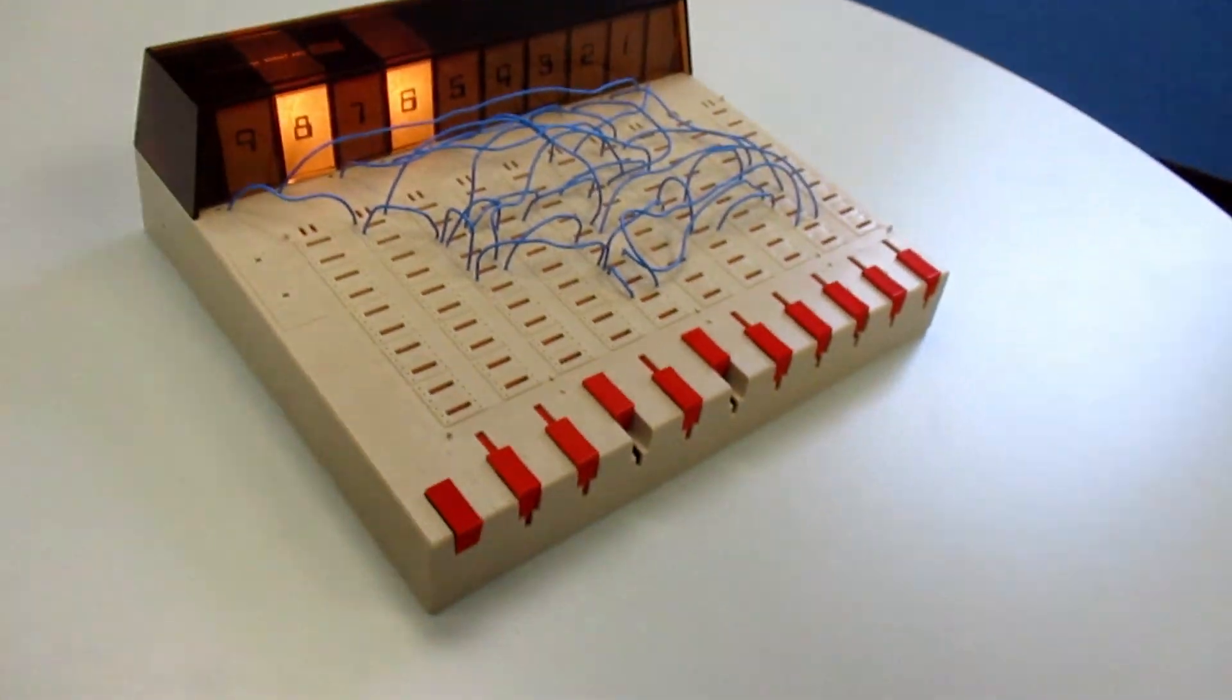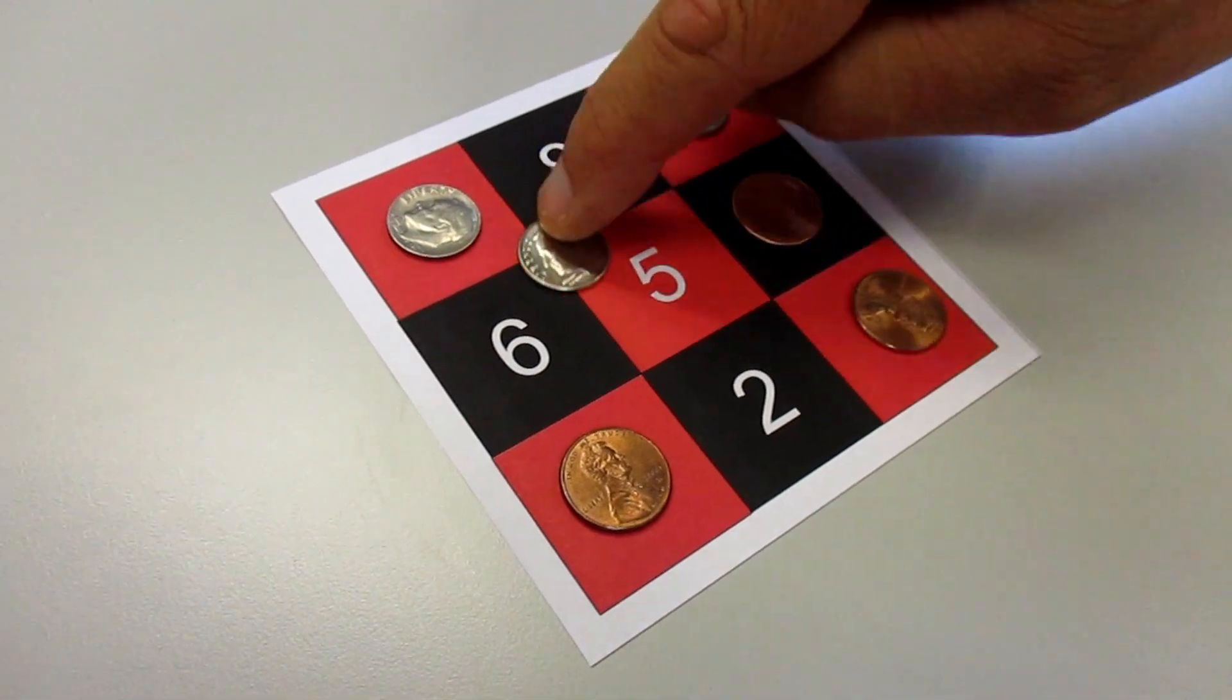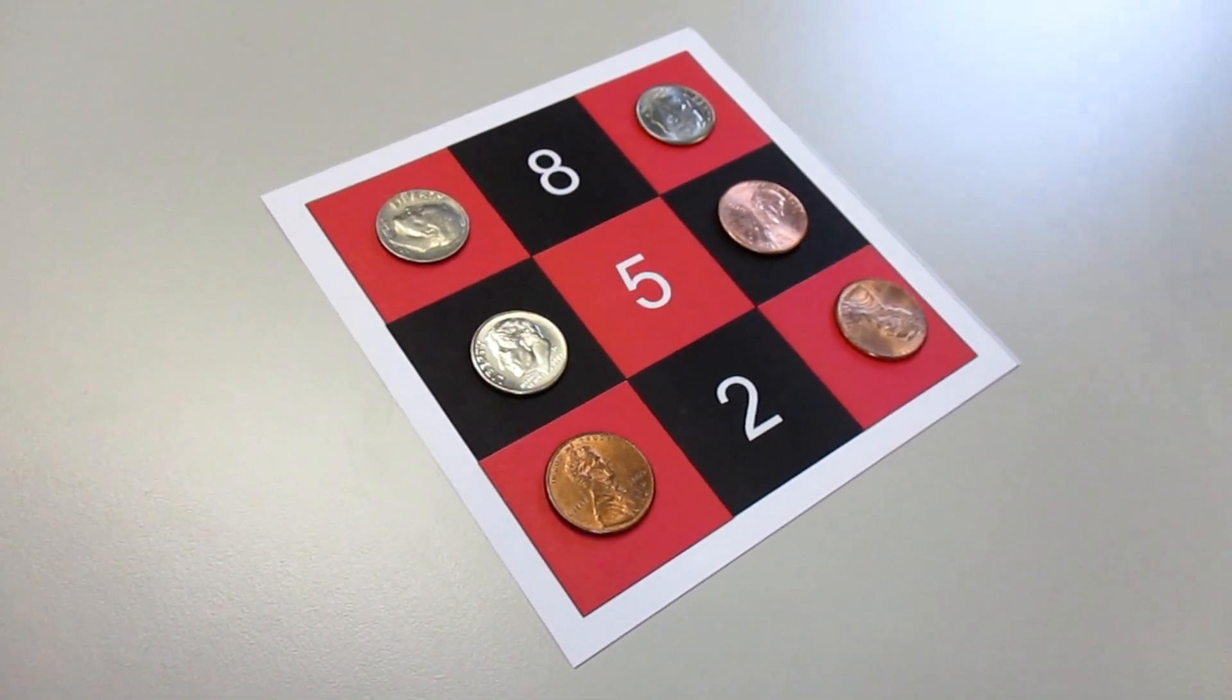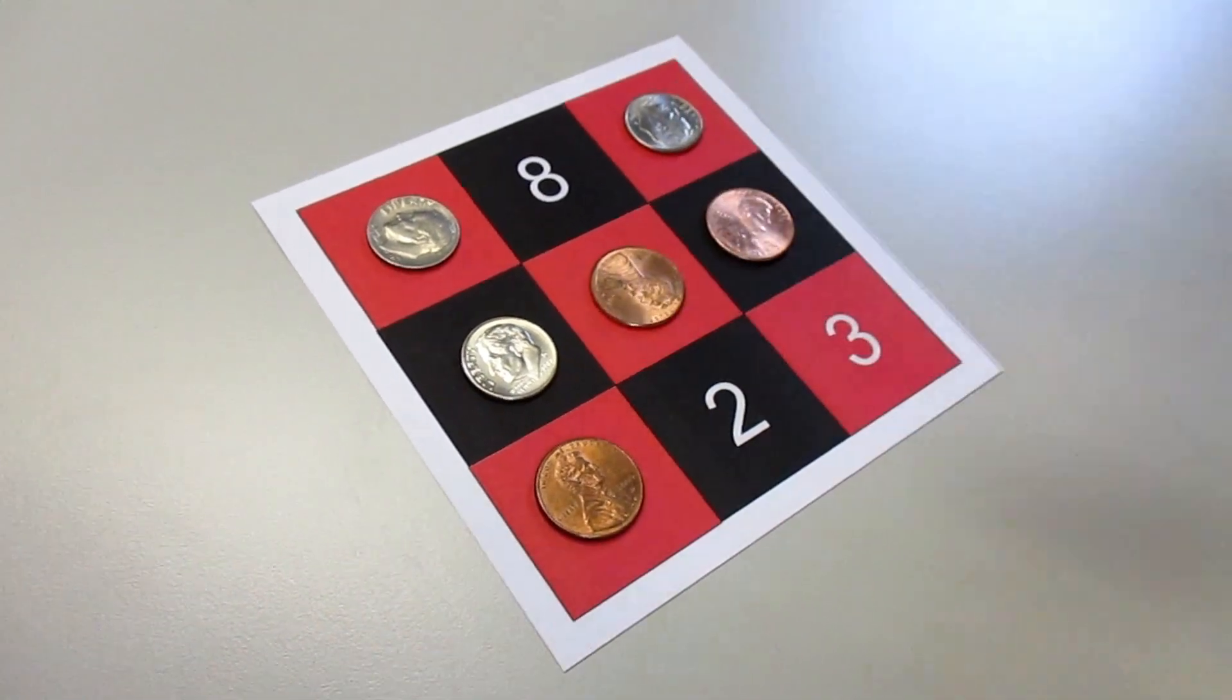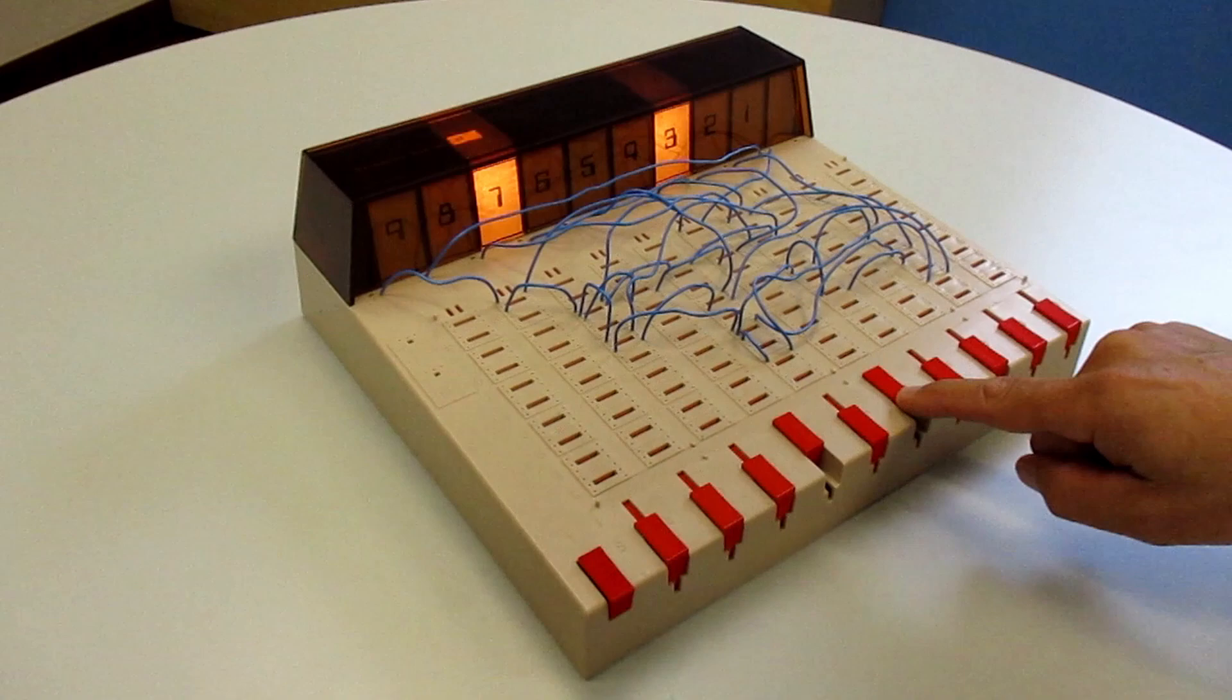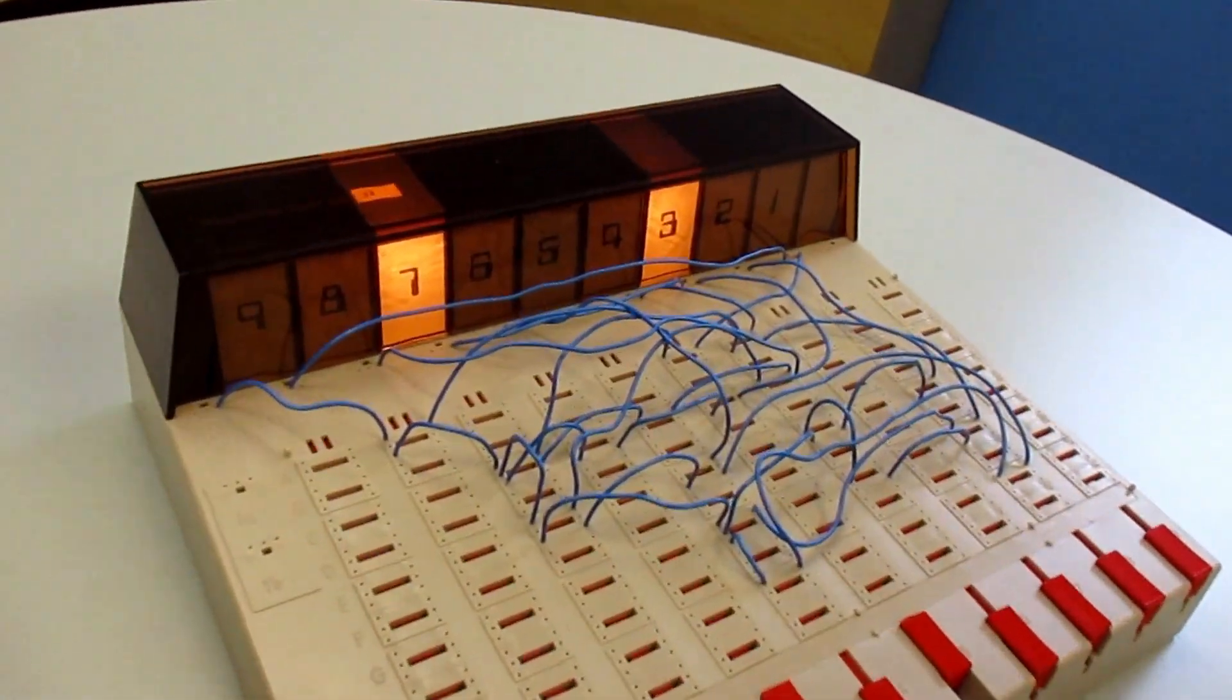Countering with a move that is symmetrical to ours from 8 to 6. Hoping to seize control over the center of the board we move from 3 to 5. In a devastating counter the 0600 takes our piece by moving 7 to 3.